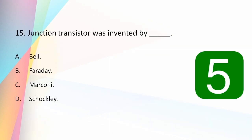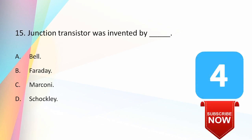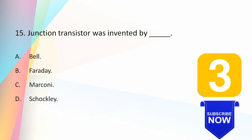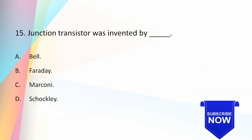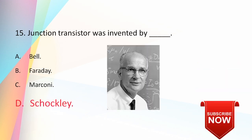The junction transistor was invented by: Bell, Faraday, Marconi, or Shockley? The answer is Shockley. The junction transistor was invented by William Shockley at Bell Labs on June 23rd, 1948.